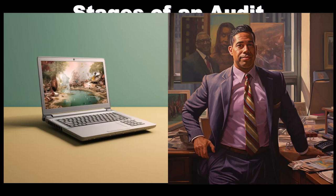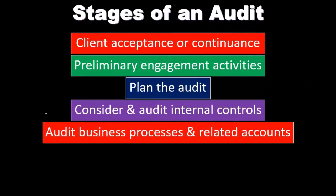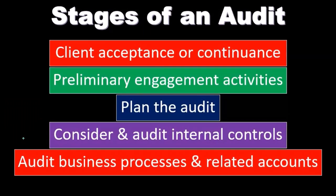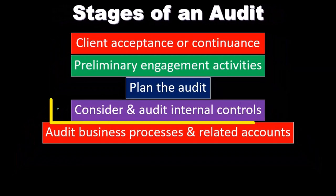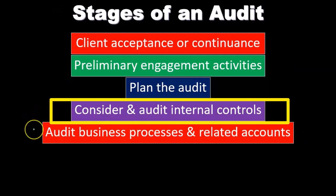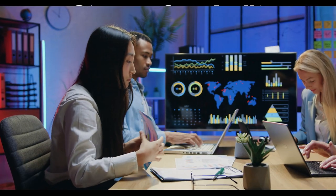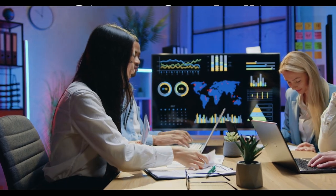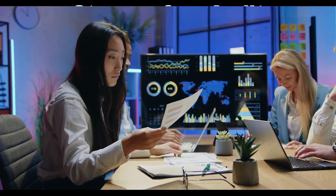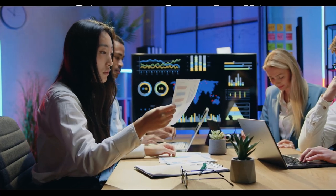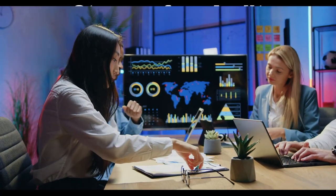There's always going to be that relationship between internal controls and substantive testing. For a large publicly traded company, our expectation is that they have a good set of implemented internal controls. If they're not good, we're in trouble because we don't have enough time to test everything. For a small company, we're actually expecting they won't have the best internal controls — they can't, they don't have the resources. That's okay. We note it, and we rely more on substantive testing as opposed to internal controls.